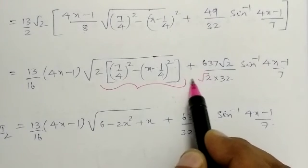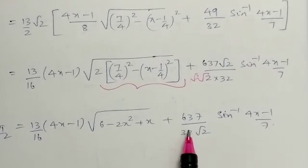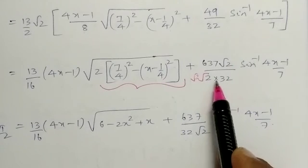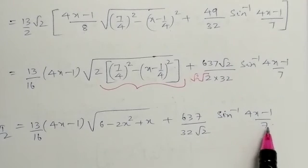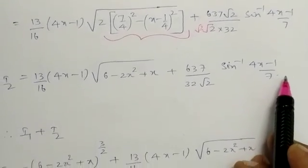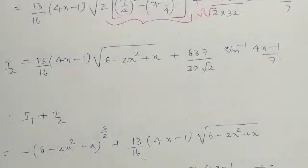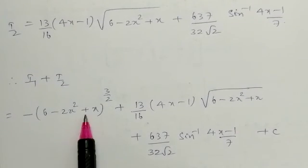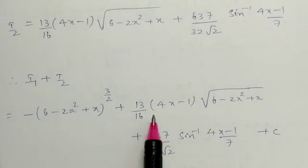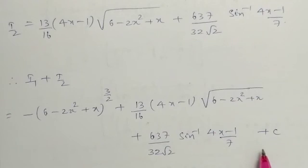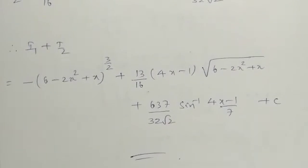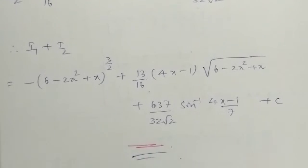Now combining I1 and I2: write the answer for I1 plus the answer for I2. The root 2 terms cancel where applicable. The final answer is -(6 - 2x² + x)^(3/2) plus (13/16)(4x - 1)√(6 - 2x² + x) plus (637)/(32√2)·sin⁻¹[(4x - 1)/7] + C. This is a very important problem and no further simplification is needed.